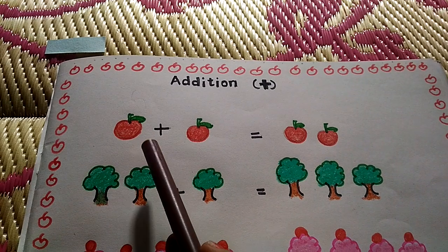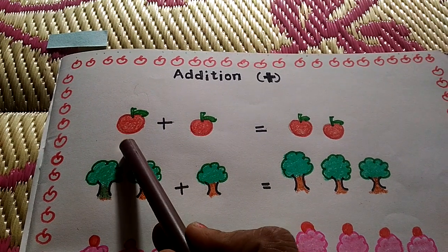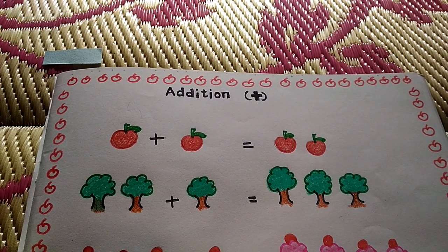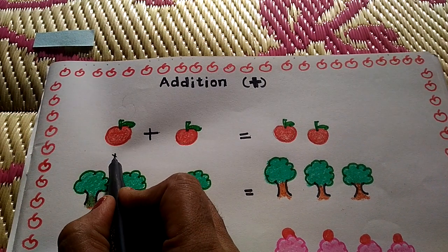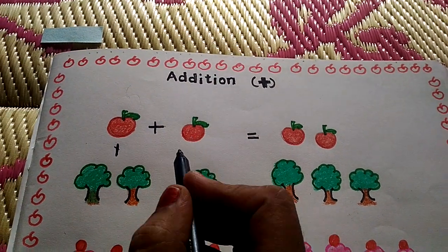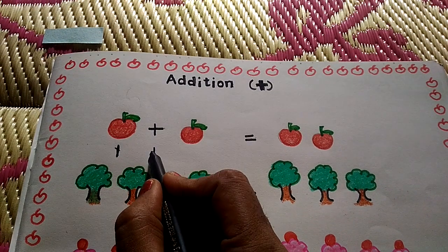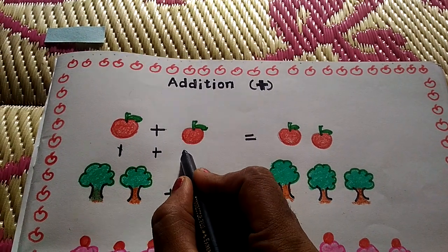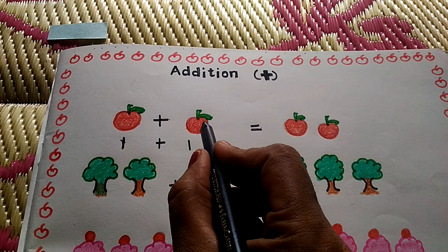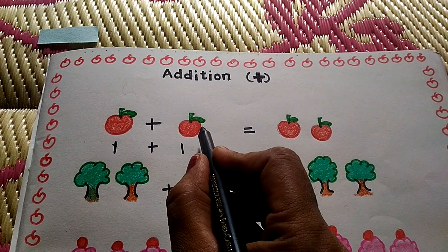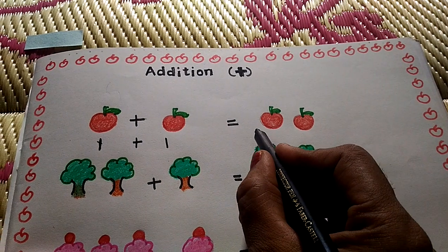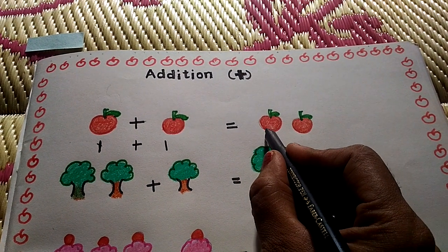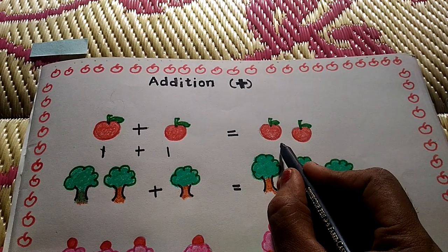See some examples here. How many apples here? One. How many apples here? One. One plus one equal to. See here, how many apples here? Two apples. One, two. Two apples.